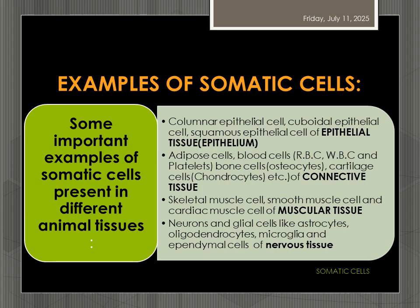Let us take some important examples of somatic cells. Somatic cells are present in all types of animal tissues. There are four types of animal tissues: epithelial tissue, connective tissue, muscular tissue and nervous tissue. Epithelial cells like columnar epithelial cells, cuboidal epithelial cells, squamous epithelial cells — they are somatic cells.